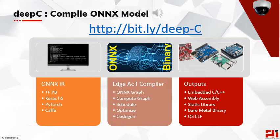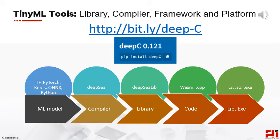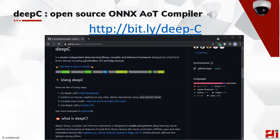DeepSea is available on GitHub at bit.ly/deep-C. It takes an ONNX model as input, creates a compute graph to optimize and schedule ML operations, and generates code in embedded C, embedded C++, WebAssembly, static library, bare-metal binary, and OS ELF. DeepSea is an open source AOT compiler released under the Apache license. It supports Python, allows development of custom ML algorithms under an inference framework, and runs in Google Colab and other popular web IDEs like Canvas.